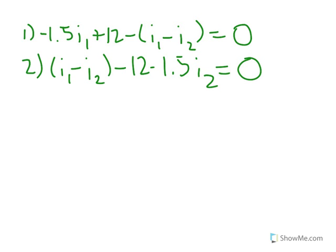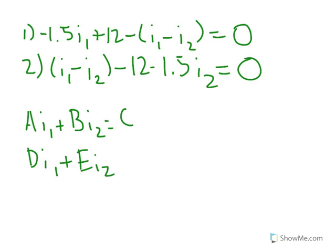So the way we do this is we want to write these in a way so that we line up the variables. And we want to end up with the form A I1 plus B I2 equals C. D I1 plus E I2 equals F. And A, B, C, D, E, F are all just random numbers that we would get from rearranging the equations.